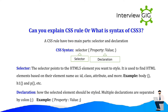Can you explain a CSS rule set? Or what is the syntax of CSS? A CSS rule has two main parts: selector and declaration. CSS syntax: selector { property: value; }. The selector points to the HTML element you want to style. It is used to find HTML elements based on their element name, id, class, attribute, and more. Examples: body, h1, and p, etc.